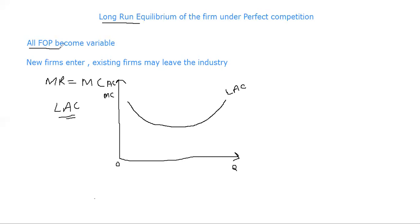All factors of production become variable. A firm can build a new factory and install a new plant. New firms can enter the industry, and existing firms have the option to leave. In long-run, there is no distinction between fixed and variable factors. The average cost curve is the average total cost curve. The falling part of the long-run average cost curve represents economies of scale, the flat part indicates constant returns to scale, and the rising part represents diseconomies of scale.